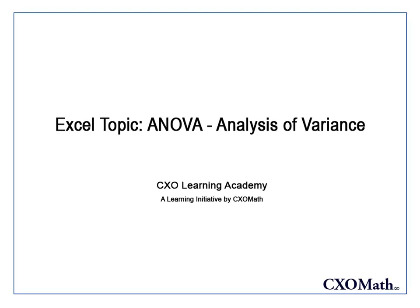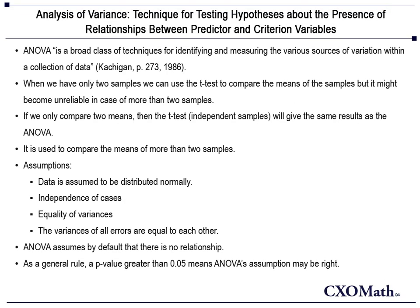In this video, we're going to look at something like ANOVA, or Analysis of Variance. ANOVA is a broad class of technique for identifying and measuring the various sources of variation within a collection of data. This description has been given to us by Ketchigan, who is the author of several innovative books in mathematics and psychology, including that of multivariate statistical analysis.